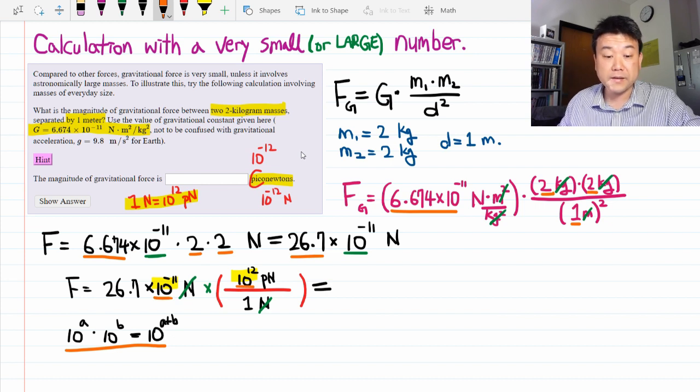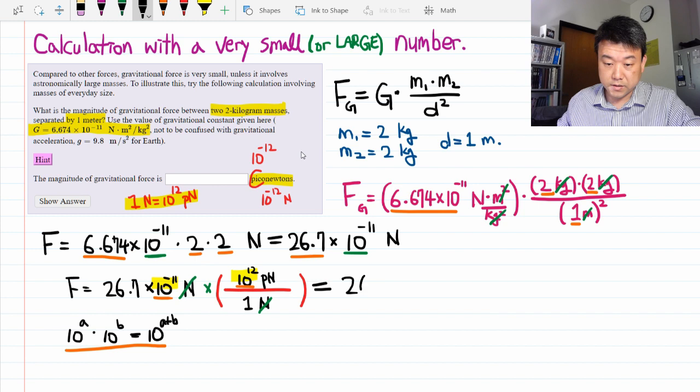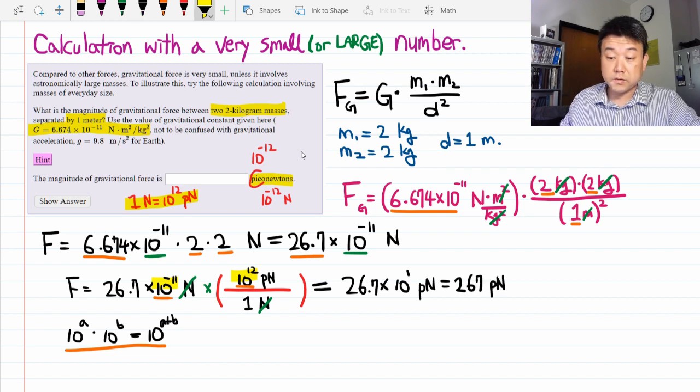So with this exponential algebra rule, I can simplify 10 to minus 11 times 10 to the 12 as 10 to 1, or 26.7 times 10 to 1 or 10 piconewtons. Or I can simplify it a little more, 267 piconewtons. So that's how you arrive at the correct answer.